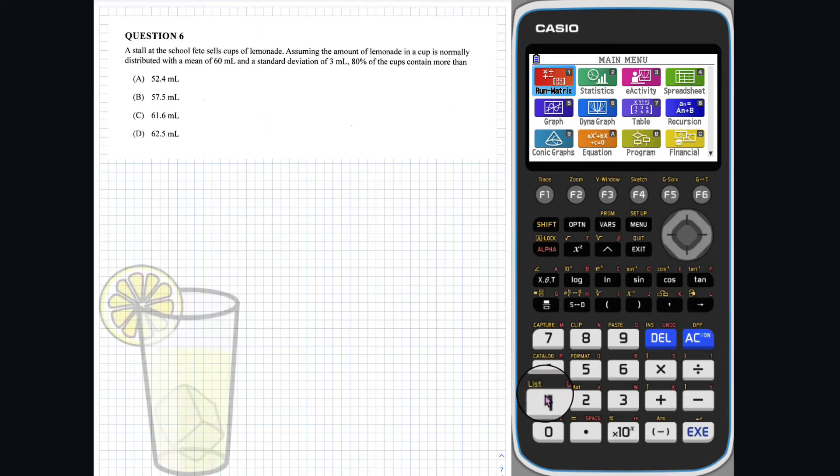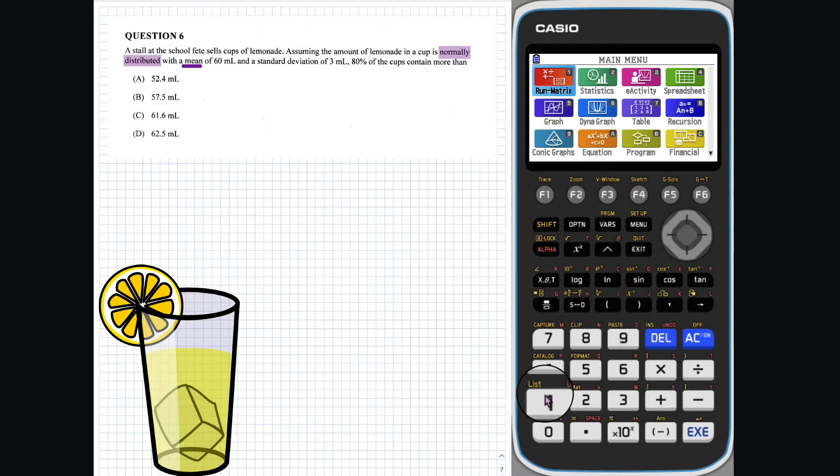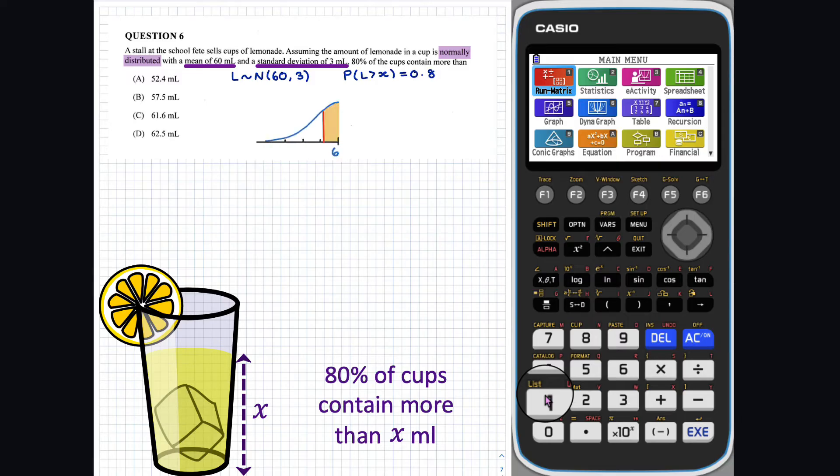Question 6. We are told that the amount of lemonade in a cup is normally distributed with a mean of 60 millilitres and a standard deviation of 3 millilitres. We want to determine how much lemonade, x, is in a cup, so that 80% of the cups contain more than this value. This can be written as... And visually looks like this. This probability can be evaluated in the stats mode on our calculator.